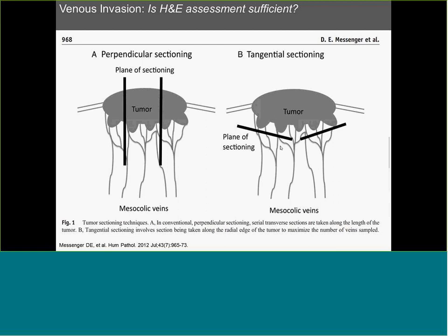There is also important work from a Canadian-led paper on how to section a tumor. The anatomical distribution of the mesocolic veins runs perpendicular to the tumor, so if you use a plane of section going straight down, you miss a lot of the mesocolic veins. Changing your grossing technique to a more tangential section at the area of deepest invasion within the colorectal cancer ensures you get the largest denominator possible to identify invasion in mesocolic veins.